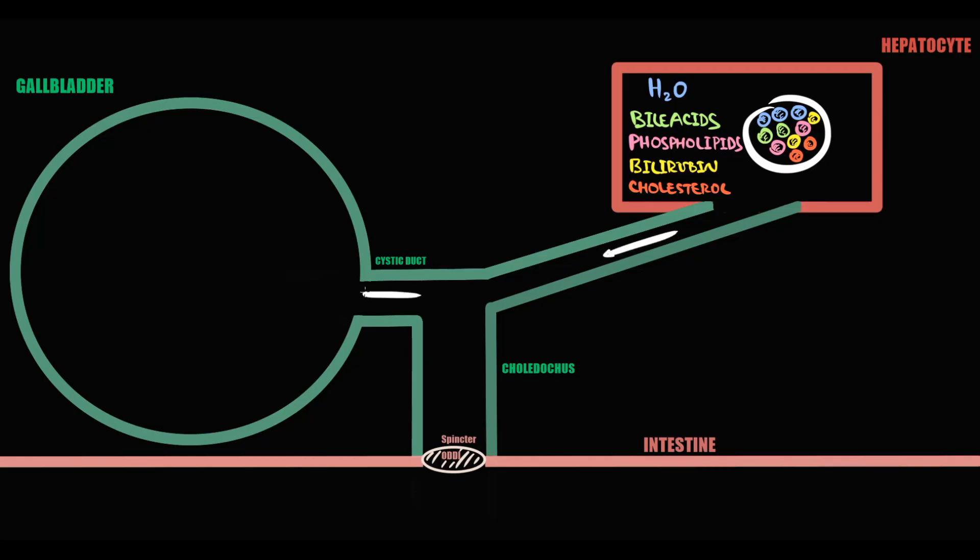Once bile is produced by the liver, bile through the bile ducts comes to the gallbladder. The gallbladder is the place where bile is stored until we consume some fatty food.